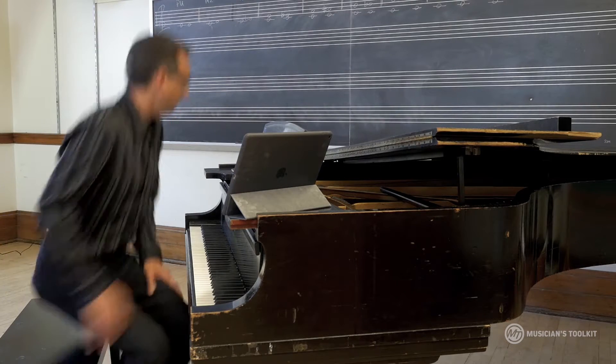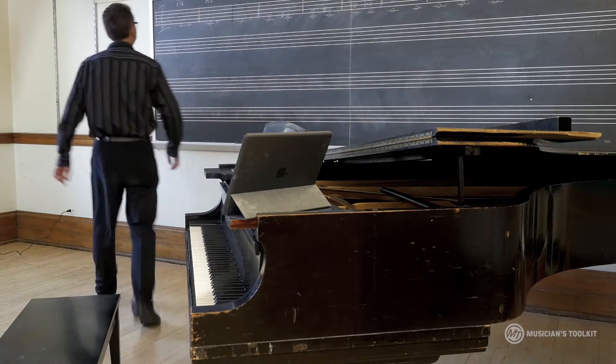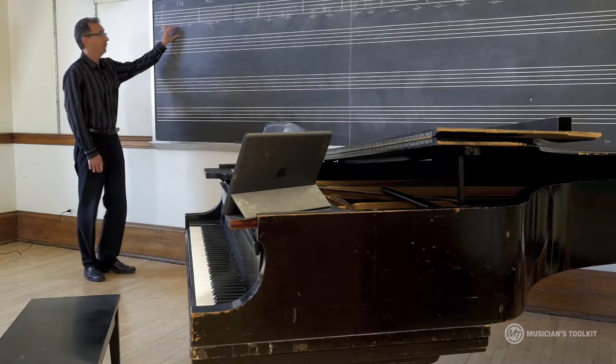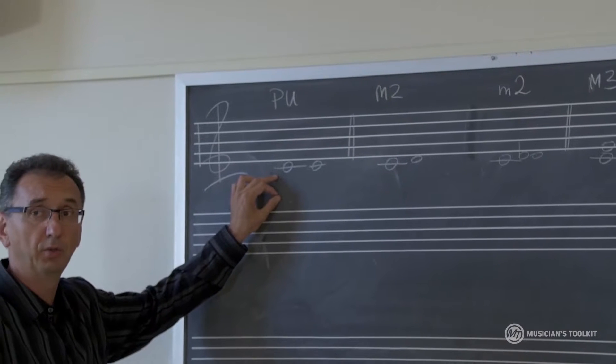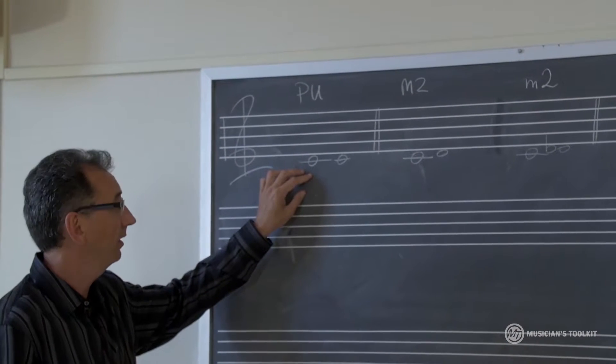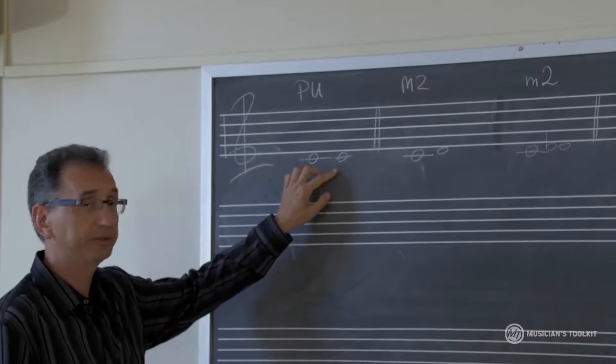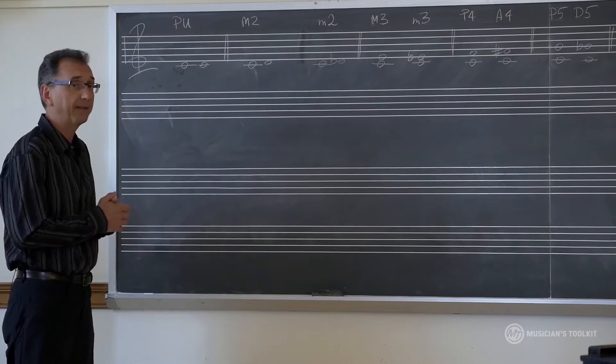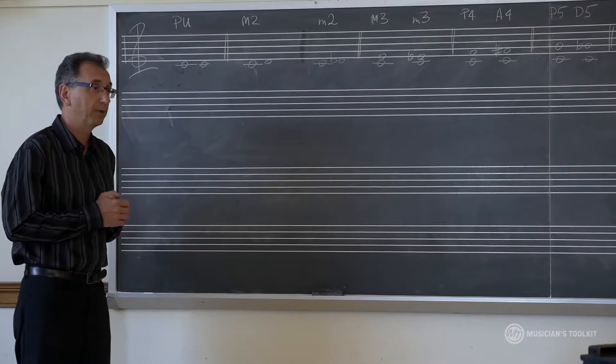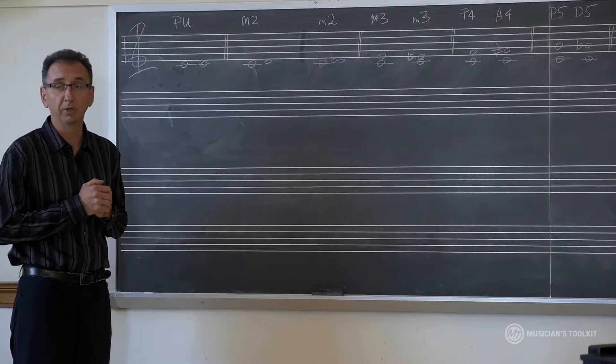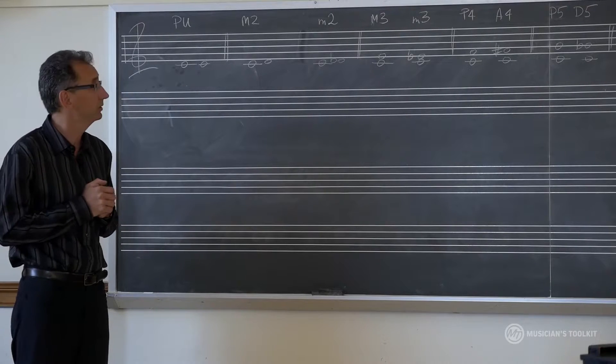So on the board, you can see basic intervals. Perfect unison is the distance between two nodes of the same name, C to C—that's your perfect unison. And as far as alterations of the unison, we can have diminished unisons and augmented unisons.